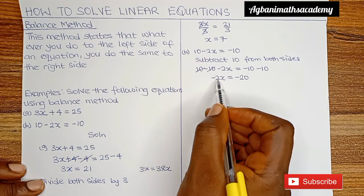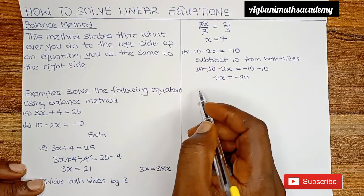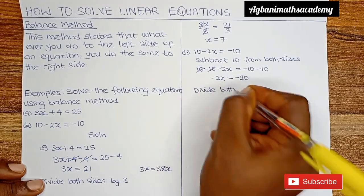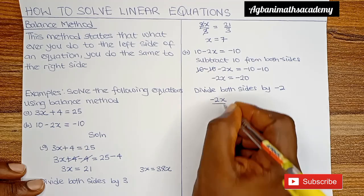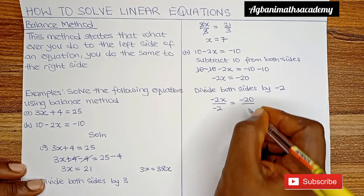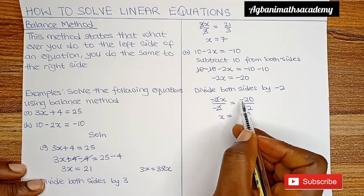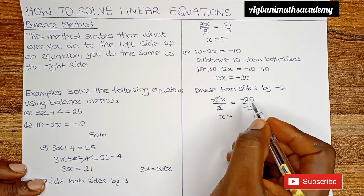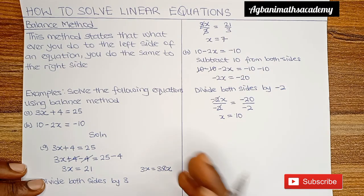We are done eliminating plus 10. The next value to eliminate is minus 2, which is attached to x by an invisible multiplication sign. To cancel out minus 2, we divide both sides by minus 2 so that x is left alone on the left side. So minus 2x divided by minus 2 is equal to minus 20 divided by minus 2. Minus 2 cancels out minus 2. We have x is equal to — minus divided by minus gives us plus. When the two signs are the same, the answer is positive. 20 divided by 2 gives us 10, so x equals 10.